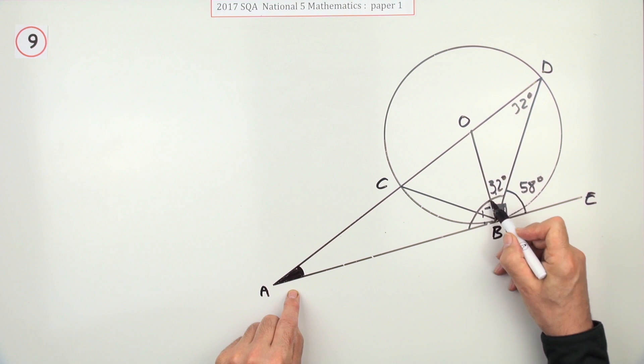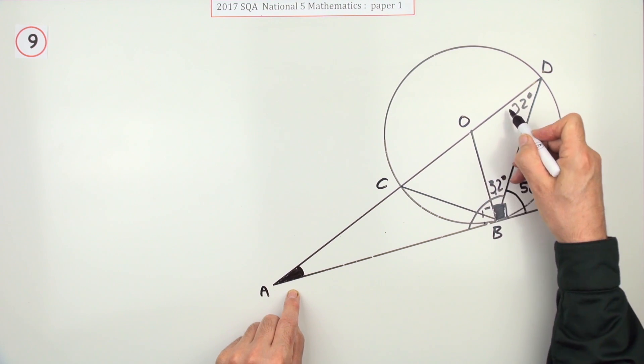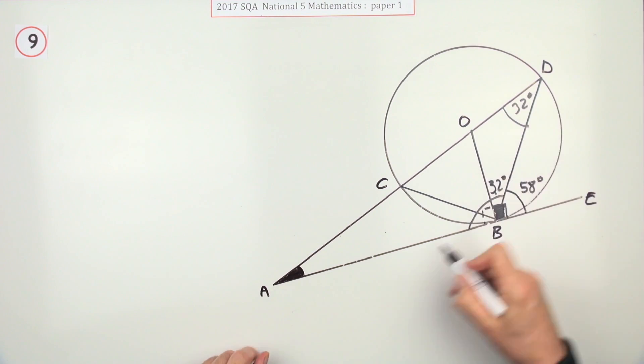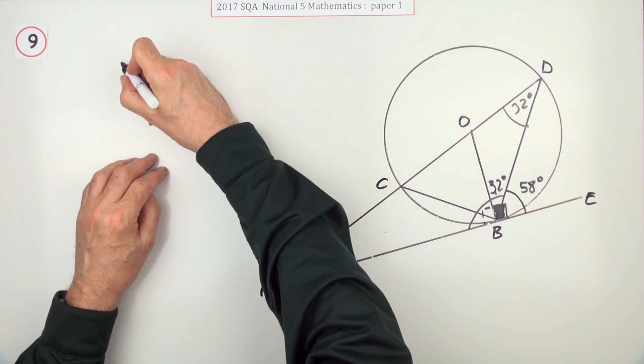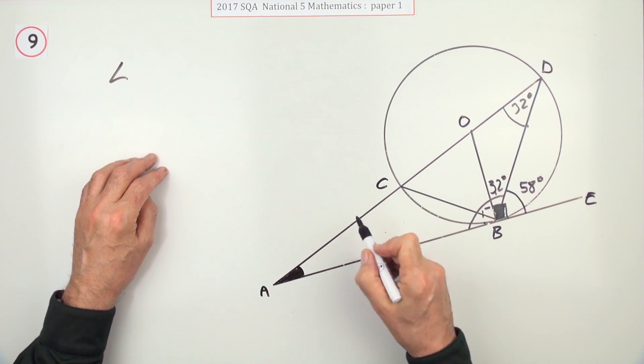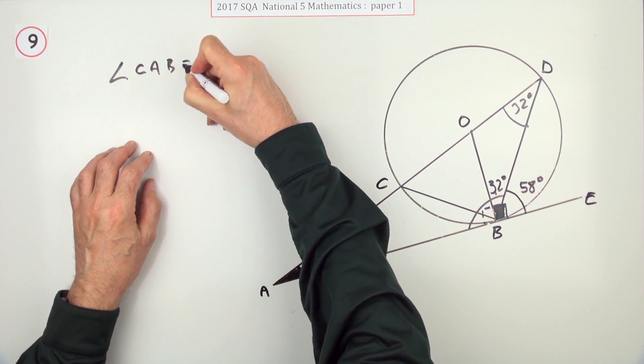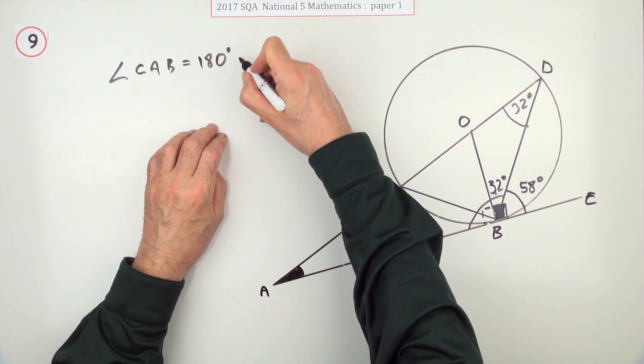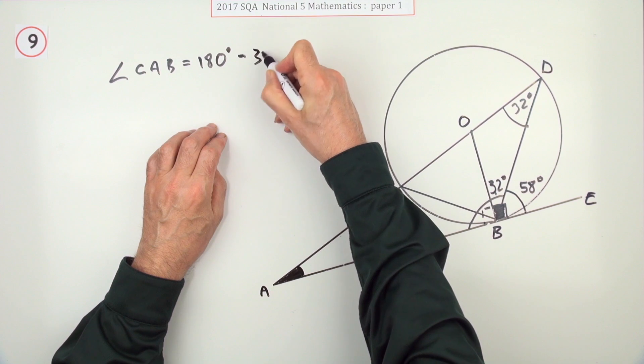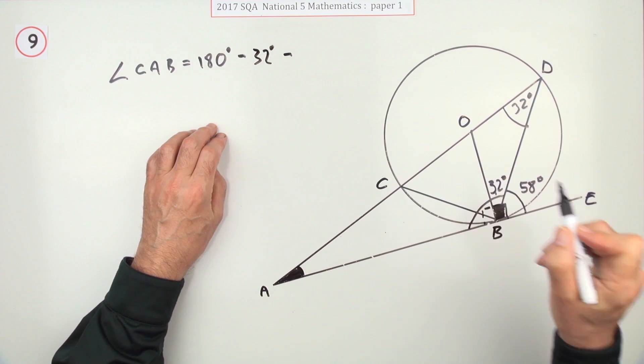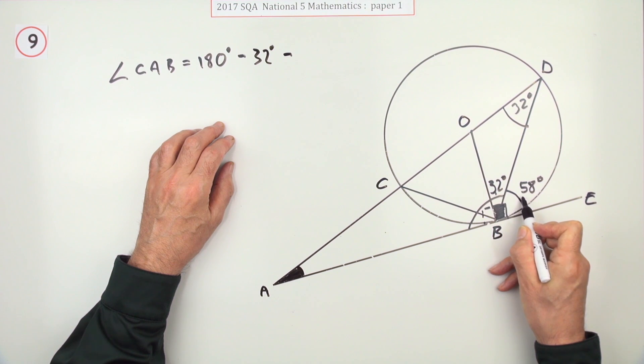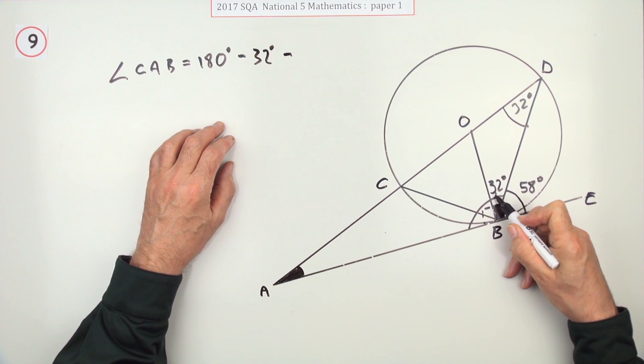So I took 58 away from 90 to get 32. This gave me this angle up here. If you take 58 away from 180, it gives you an angle in here. So there's only one left in the big triangle ABD. There's different routes. So I'll say this. The angle I want, the angle CAB will be 180 minus the 32, and minus the angle in here, which is either 180 minus 58, or 90 plus that.